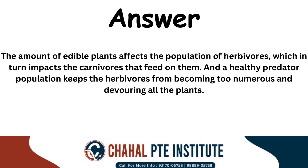The amount of edible plants affects the population of herbivores, which in turn impacts the carnivores that feed on them. And a healthy predator population keeps the herbivores from becoming too numerous and devouring all the plants.